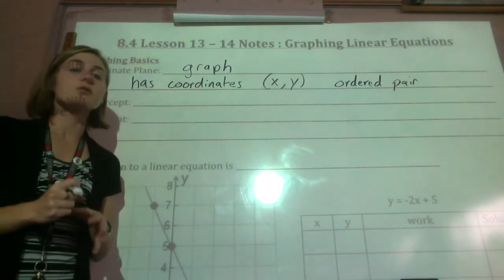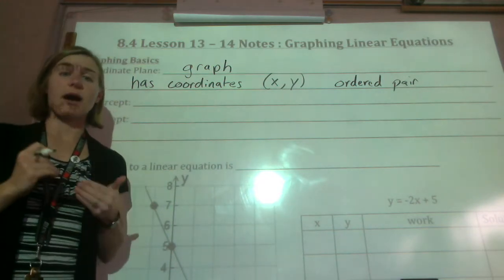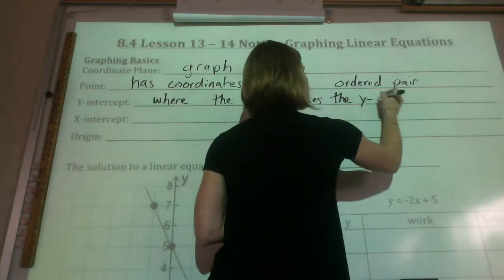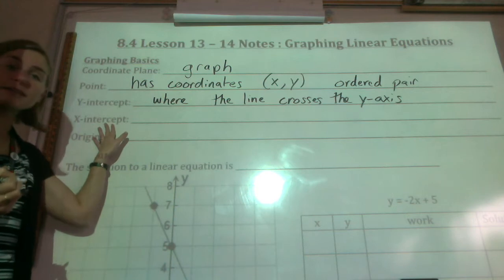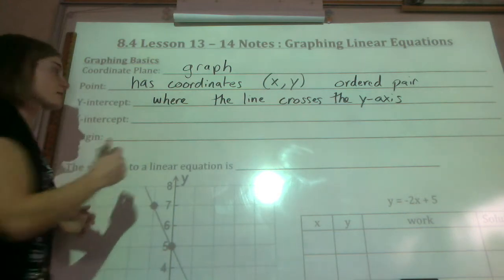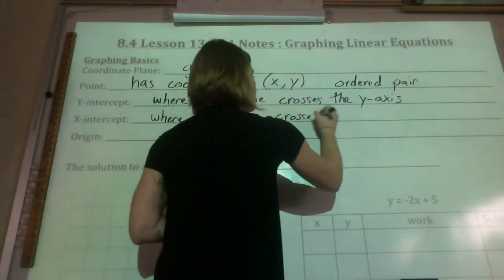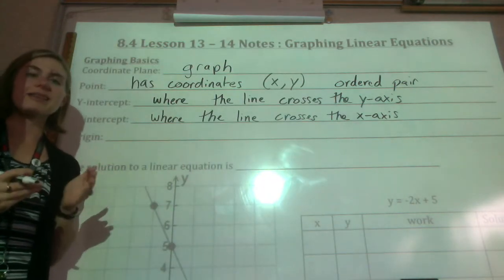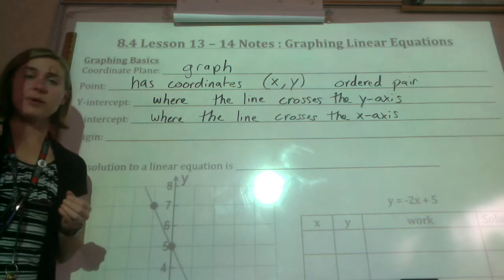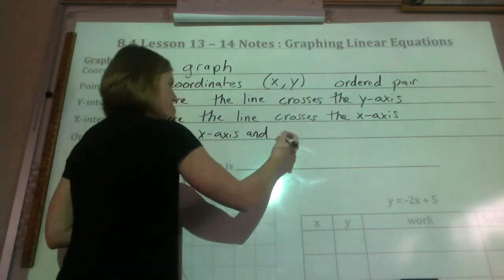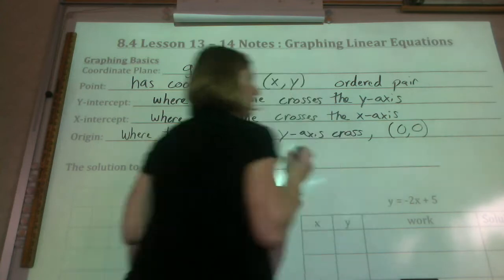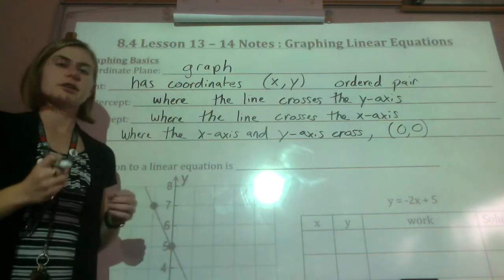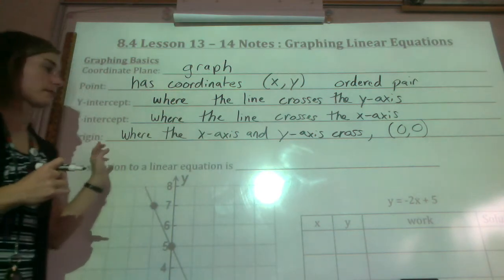The y-intercept is where a line crosses the y-axis. And then same thing, the x-intercept is where the line crosses the x-axis. The origin is just where the axes cross, which is the point (0,0). So a lot of times you'll hear them say, starting from the origin, and that's (0,0). So there is some of just the vocab basics.